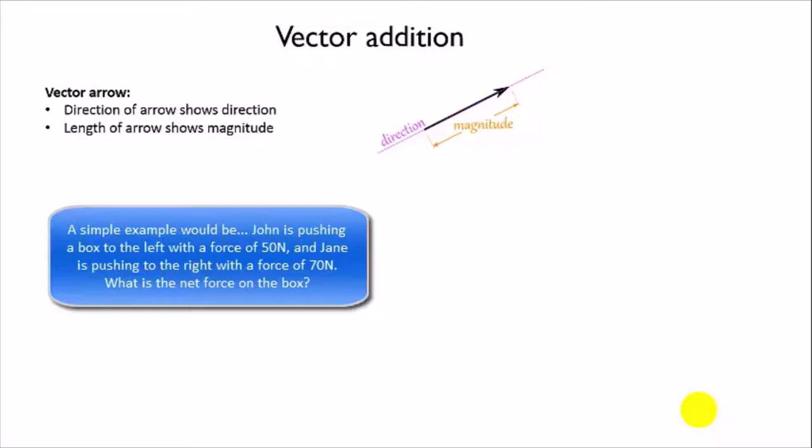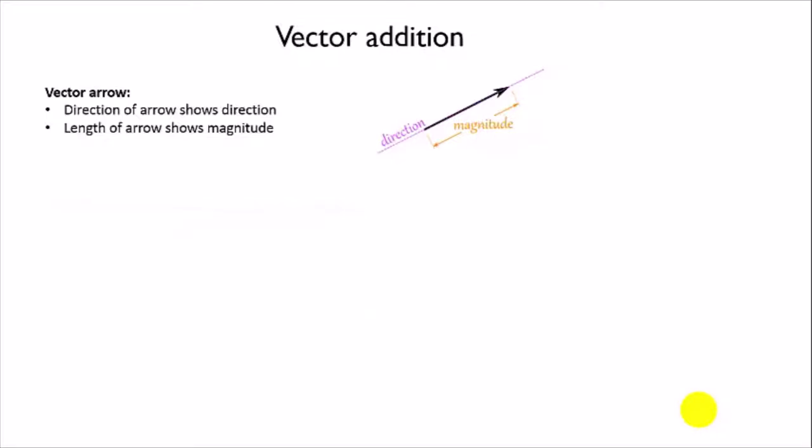We start by identifying individual vectors. A vector is represented by an arrow. The direction of the arrow shows the direction and the length of the arrow represents the magnitude of whatever the quantity is that you're looking at.